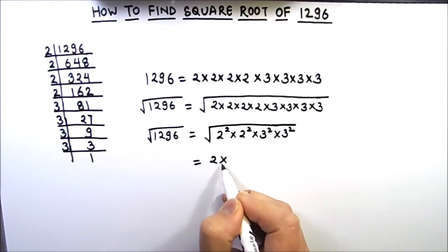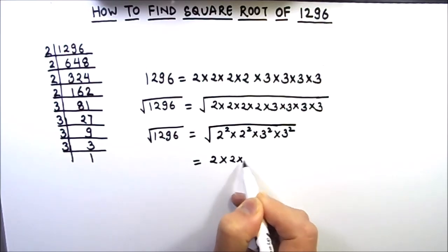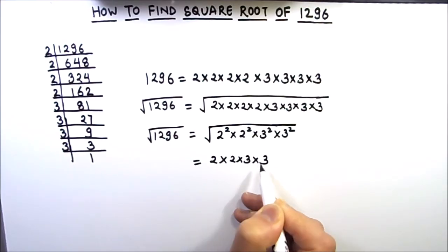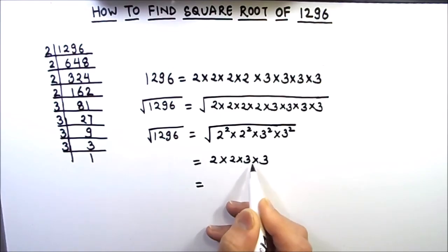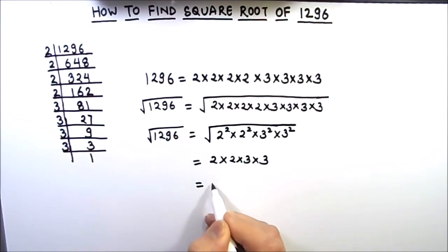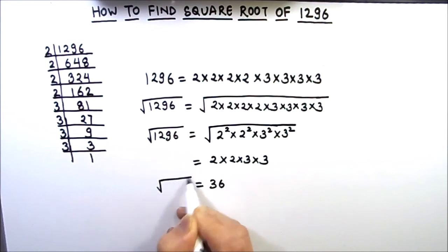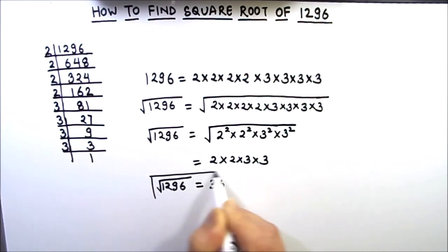So this will be 2 times 2 times 3 times 3. So 2 times 2 is 4, 4 times 3 is 12, and 12 times 3 is 36. So the square root of 1296 is 36.